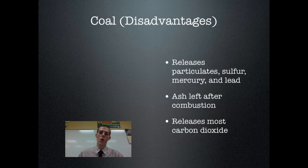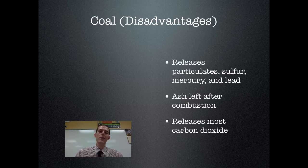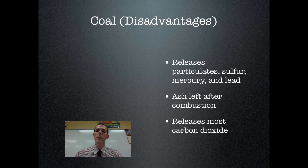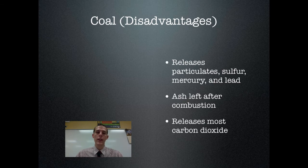The disadvantages of coal: burning coal is a dirty process. It releases particulate pollution along with sulfur, mercury, and lead into the atmosphere. Once in the atmosphere these can get into waterways or be breathed in — mercury and lead are neurotoxins, and sulfur contributes to smog formation. After burning, there is ash left over that must be dealt with — used in other materials or put in a landfill. Coal also releases the most carbon dioxide per unit burned of any fossil fuel.